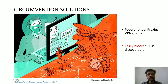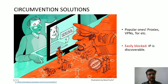As a solution, there are various circumvention systems which have been proposed by researchers, and the most popular ones which users generally use are proxies, VPNs and Tor. However, most of these proxy-based solutions suffer from a weakness: they are relatively easy to block once their IP has been discovered.